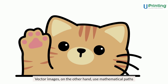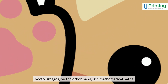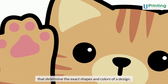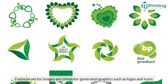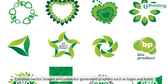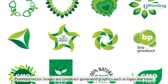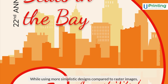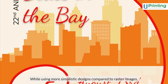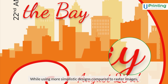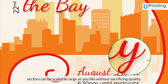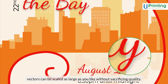Vector images, on the other hand, use mathematical paths that determine the exact shapes and colors of a design. Common vector images are computer-generated graphics such as logos and icons. While using more simplistic designs compared to raster images, vectors can be scaled as large as you like without sacrificing quality.